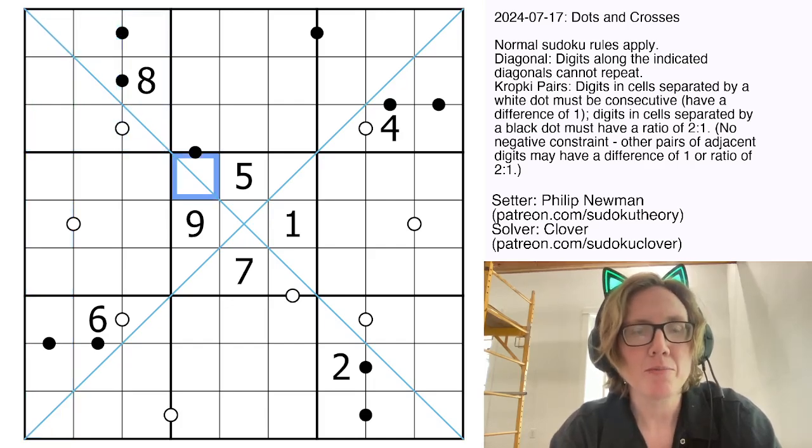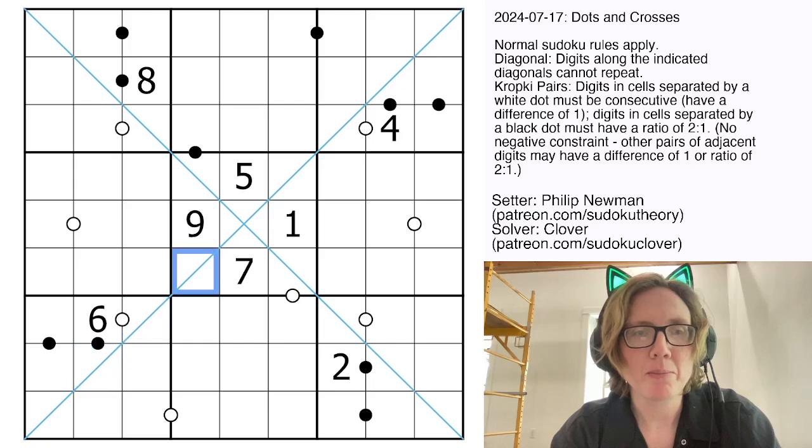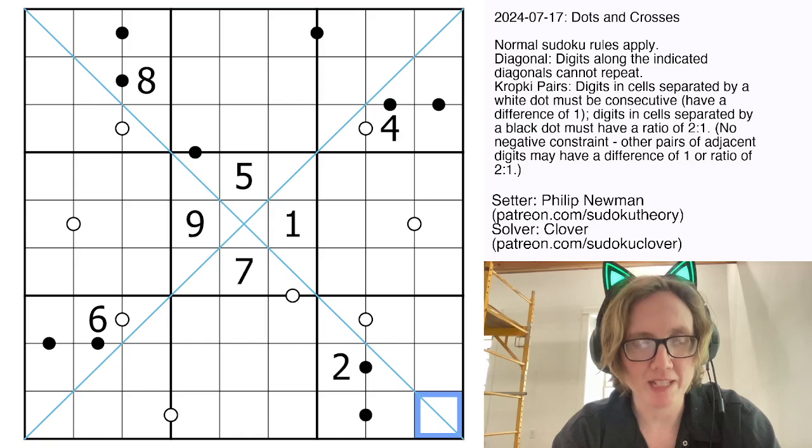Then we also have two marked diagonals in the grid, and along each of these blue marked diagonals, digits can't repeat. So for instance, this diagonal here that I'm highlighting has to contain the digits 1 through 9 one time each.